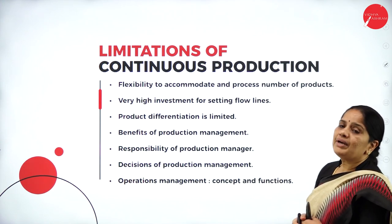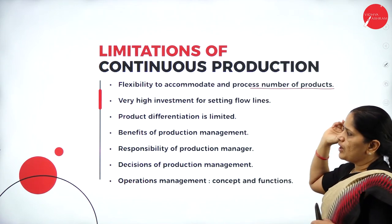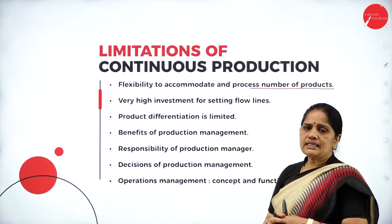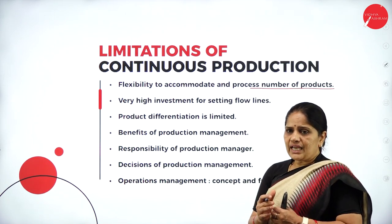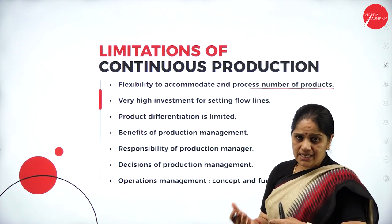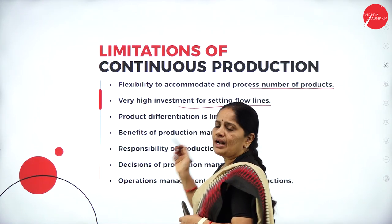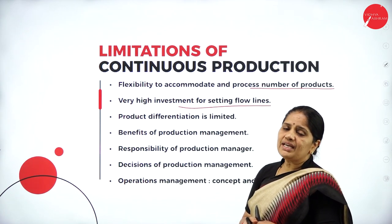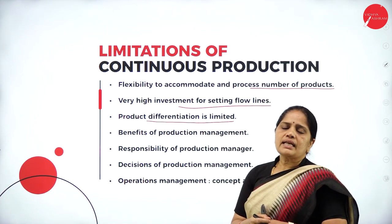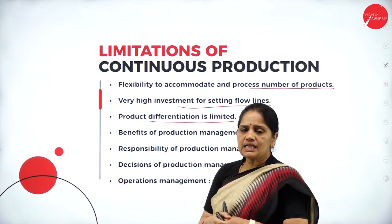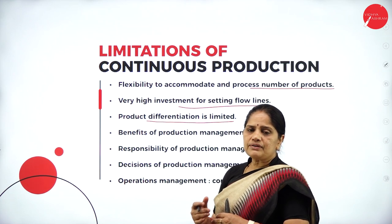The limitations of continuous production include: no flexibility to accommodate and process a number of products; very high investment required for setting up flow lines; and product differentiation is limited — only a limited number of products can be produced, resulting in limited product differentiation.